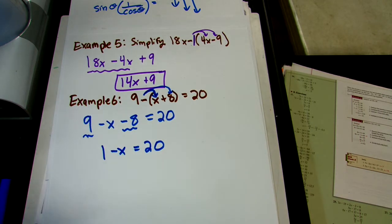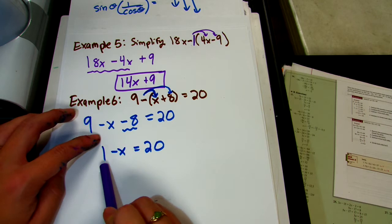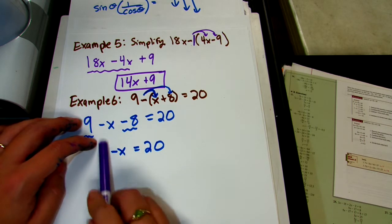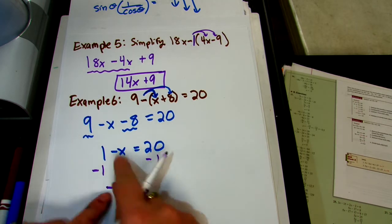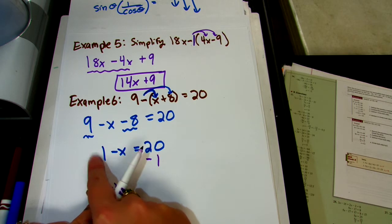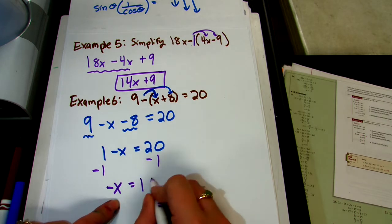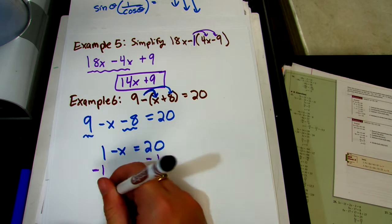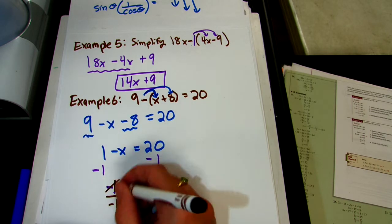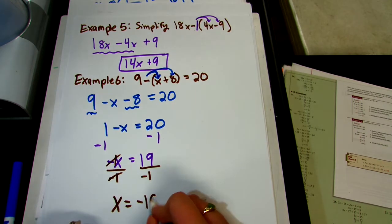We're going to solve for x. The first thing we have to get rid of is the number added to x. This is a positive 1, which means we subtract 1 from both sides, leaving us with negative x equals 19. That negative is really an invisible negative 1, so we divide both sides by negative 1, leaving us with x equals 19 divided by negative 1, which is negative 19.